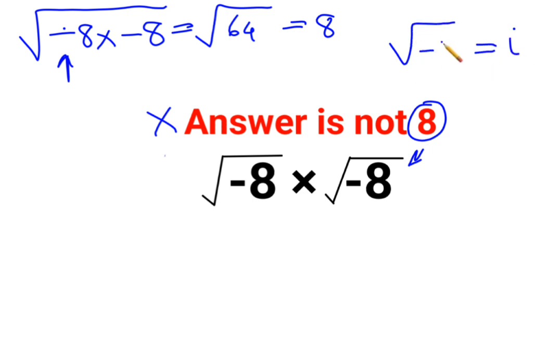So root of negative 1 is taken as i. So basically root of negative 8 can be written as root 8 multiplied by root of minus 1. And similarly, here also this can be taken as root 8 multiplied by root of minus 1.